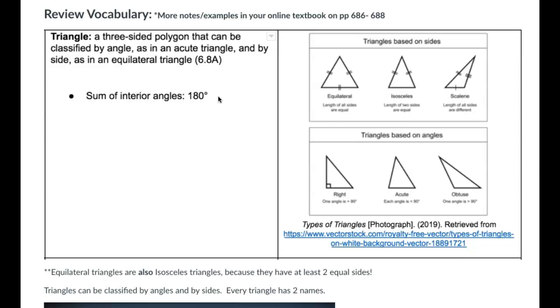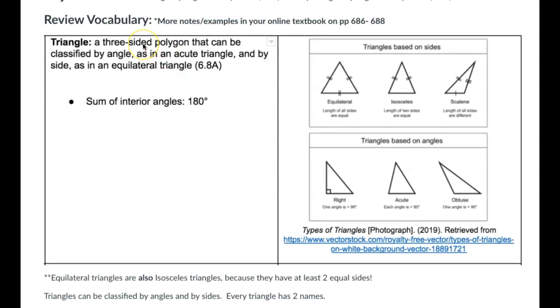So vocabulary we need to review. We do need to understand that a triangle is a three-sided polygon and that we can classify it by its angles and by its sides. We need to know that the interior angles will always add up to be 180 degrees.